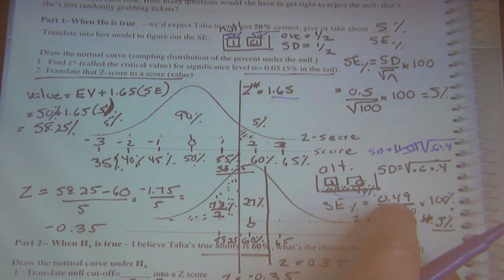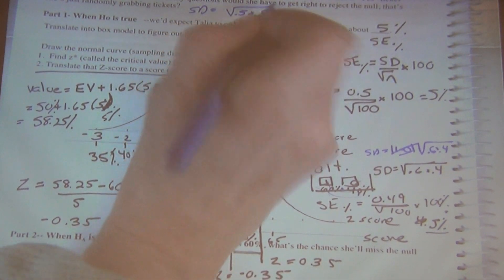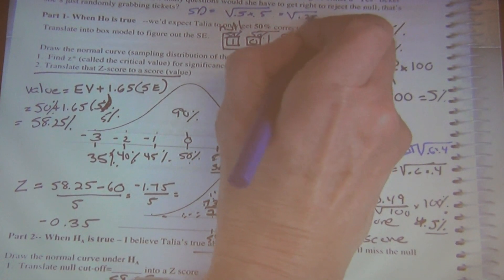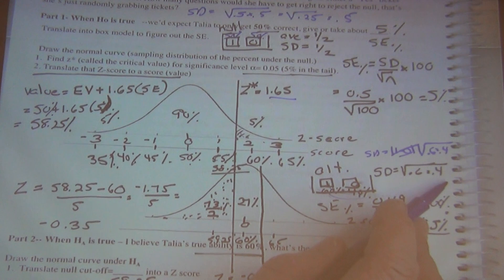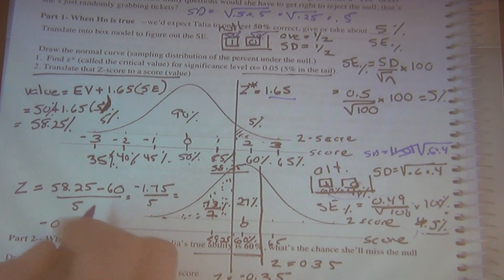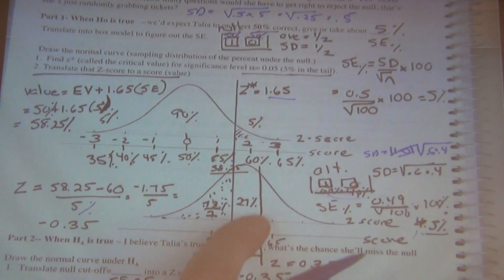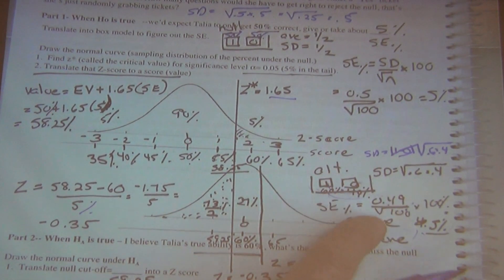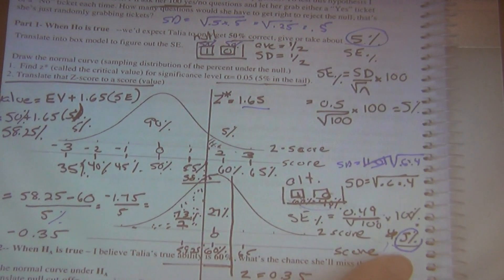It has to be less than 0.5, but only by a smidgen. The standard deviation under the null is the square root of 0.5 times 0.5, which is the square root of 0.25 = 0.5. Under the alternative it's just the square root of 0.24, which turns out to be 0.49 — approximately the same. So we get basically the same standard error of 5%. It's the same standard error, same standard deviation, and since we're sampling a hundred tickets, it's the same standard error.